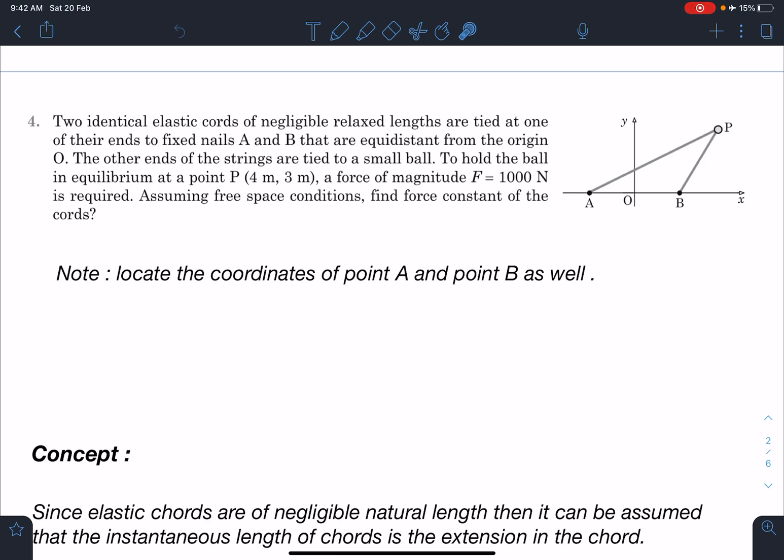The other ends of the strings are tied to a small ball. To hold the ball in equilibrium at point (4,3), a force of magnitude F which is 1000 Newton is required. Assume free space conditions and find the force constant of the cords. Also locate the coordinates of point A and point B as well.